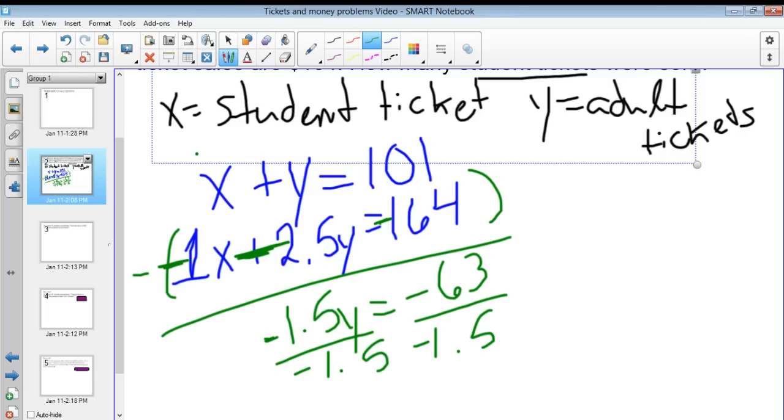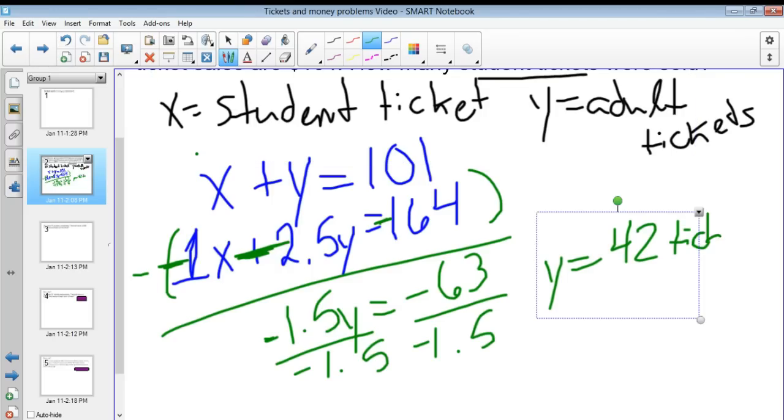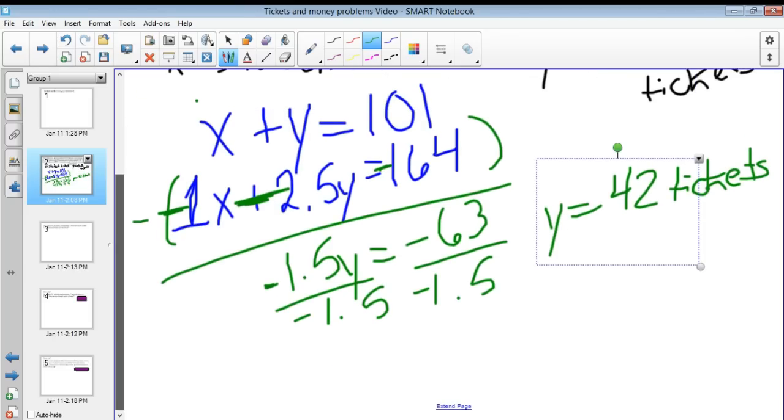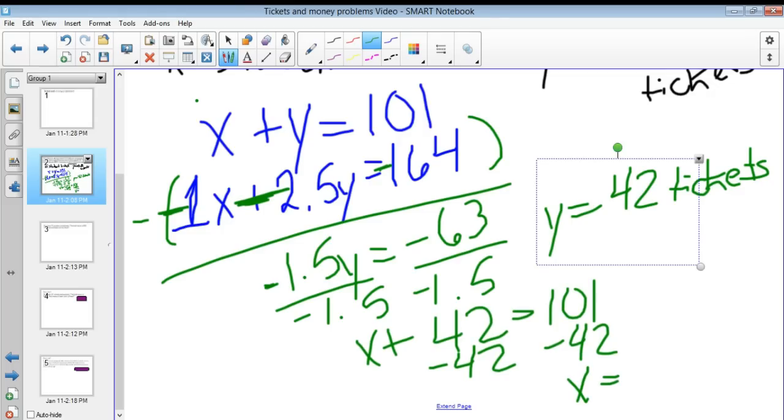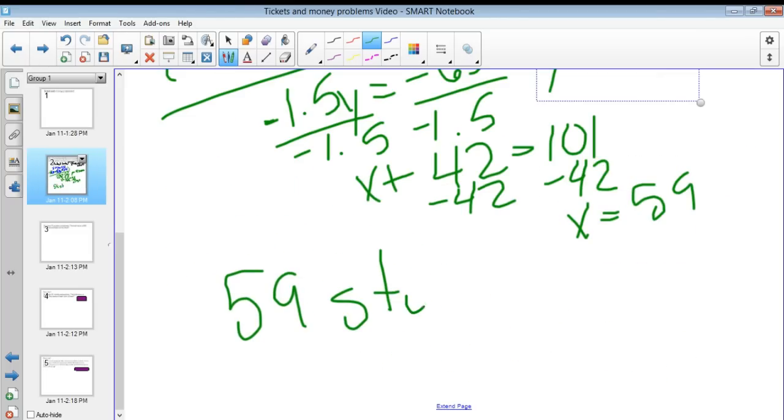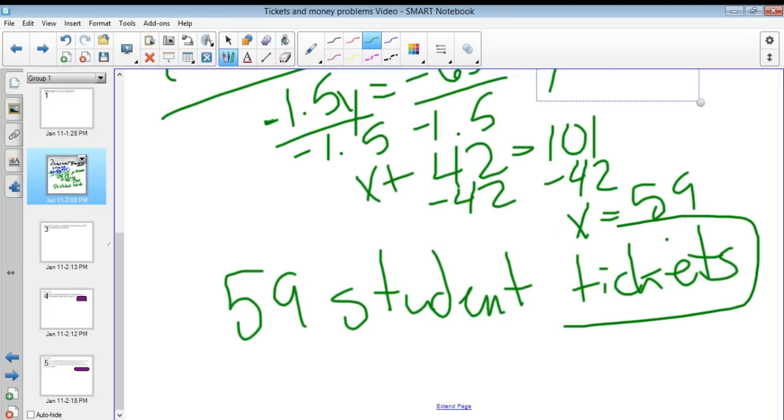Dividing both of those by negative 1.5 will give me Y is equal to 42 tickets. So that means 42 adult tickets were sold. So X plus 42, because 42 is my Y, is equal to 101, which means that X is equal to 59 tickets. So that means 59 student tickets, or 59 tickets because it's asking how many student tickets were sold. That would be my final answer because it's only asking for student tickets here.